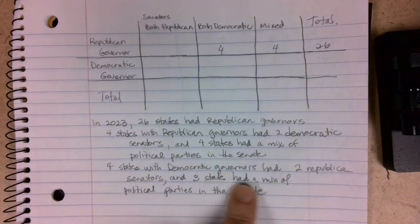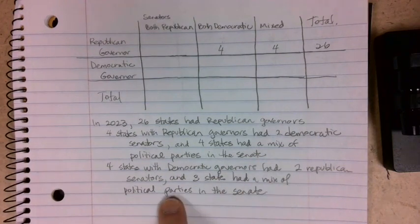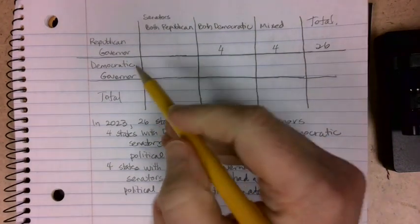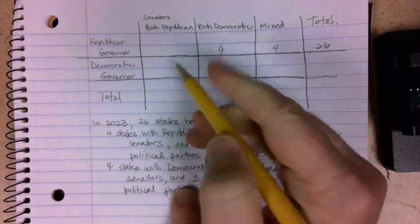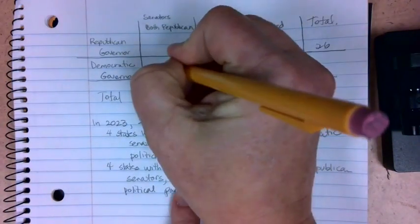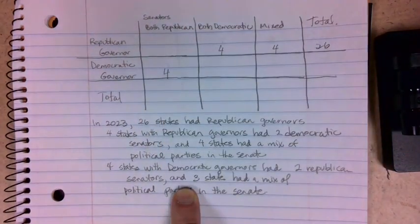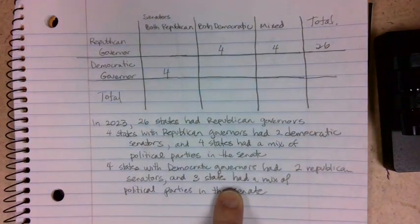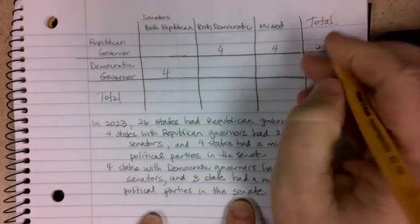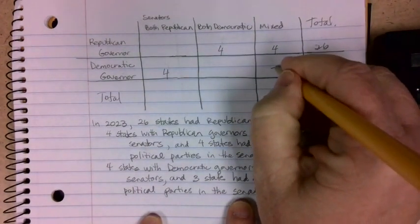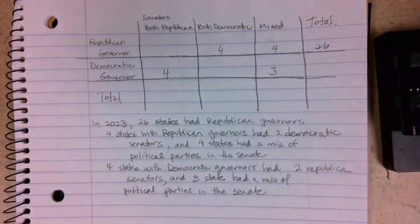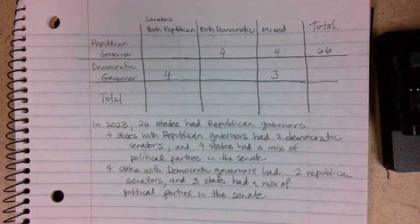For Democratic governors: four states had both Republican senators, and three states had a mix of political parties in the Senate. With this information, we can actually calculate and fill in the entire table.